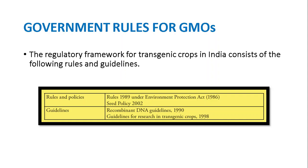The rules are the Rules of 1989 under the Environmental Protection Act of 1986, and the Seed Policy 2002. The guidelines are the Recombinant DNA Guidelines 1990 and the Guidelines for Research in Transgenic Crops 1998. The regulatory framework aims to ensure that the safety of genetically engineered plants is comparable to the safety of conventionally produced plants.